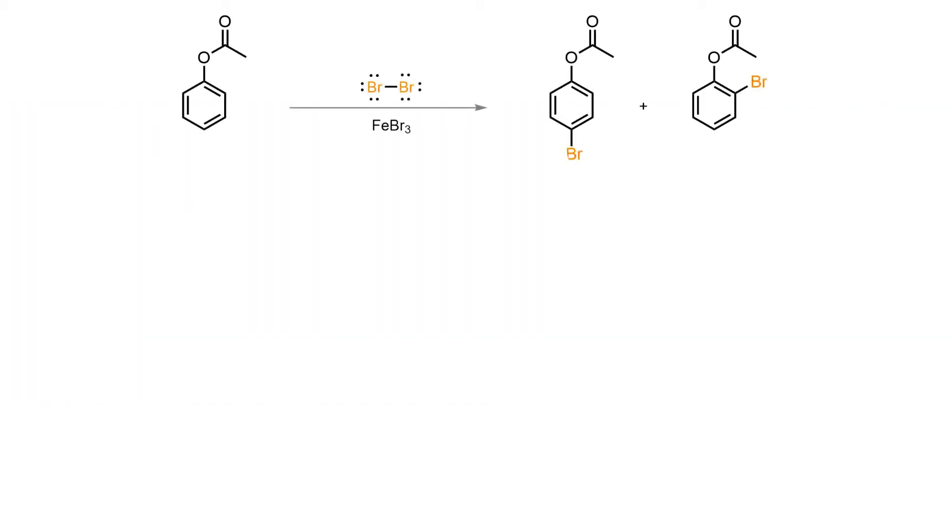Phenol acetate, an acylated version of phenol, reacts with bromine and the Lewis acid to give regioisomeric para- and ortho-bromide substitution outcomes as the major products.